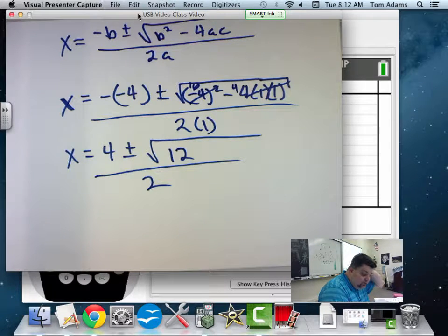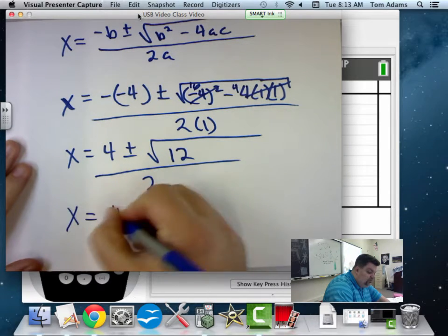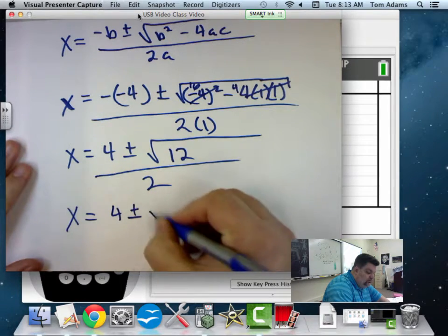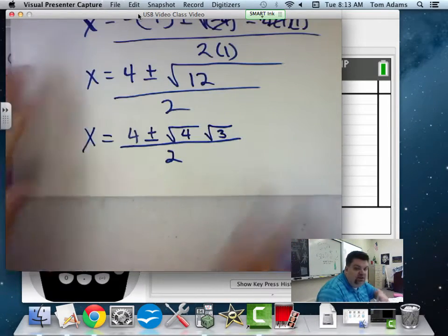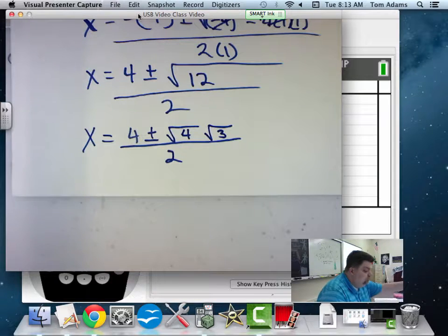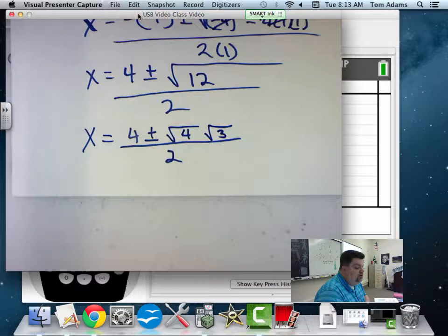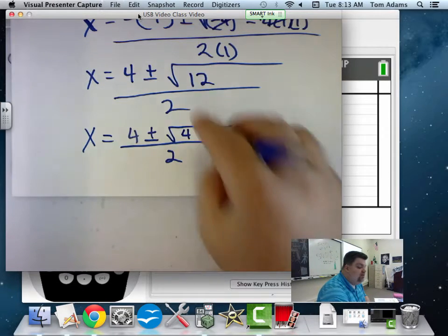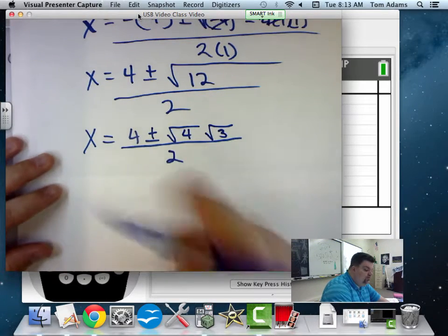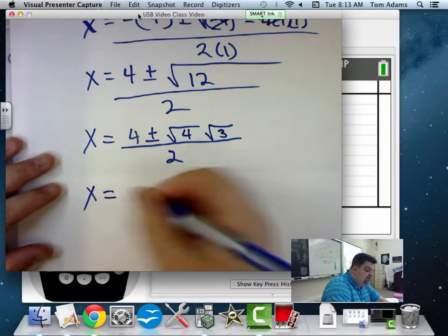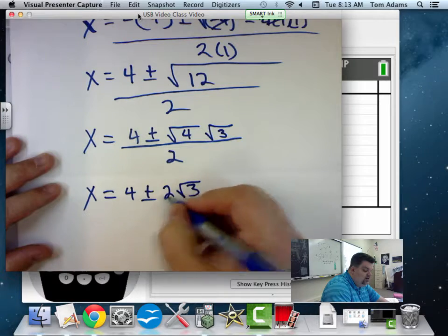All right, so now 12 can be reduced. Isn't that the same as? Can I do that? Yes, Mr. Adams, you could do that, right? Because 4 times 3 is 12. Those are the properties of radicals. But what is the square root of 4? 2. So on my next line, I've got x is equal to 4 plus or minus the 2 root 3 all over 2.